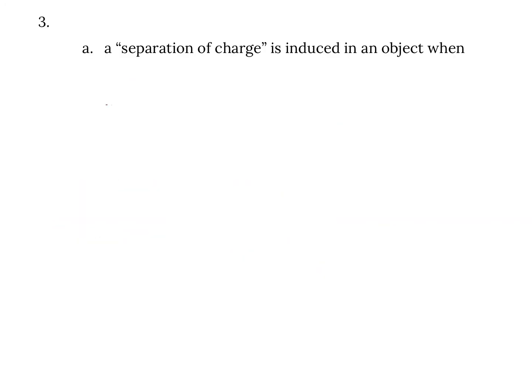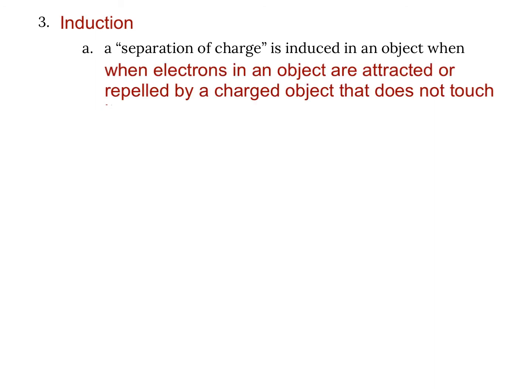The final form of charging is called induction, sometimes called a separation of charge. This is where a separation of charge takes place because electrons are attracted or repelled by a charged object that does not touch. In friction, objects touched and rubbed. In contact, they simply touched. In induction, there is no touching involved at all.